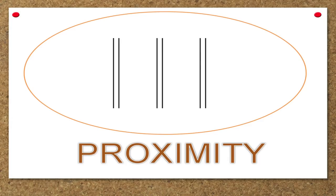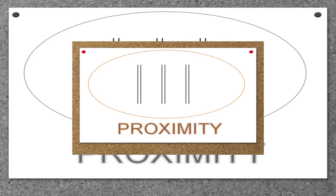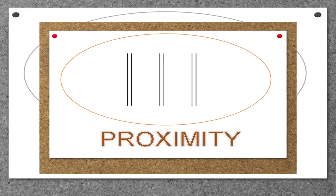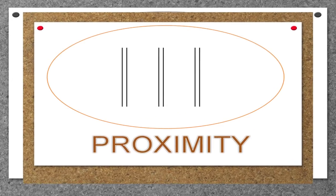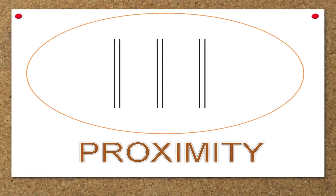The second is the law of proximity — all stimuli that occur together in space or time will be organized together. You can observe in the following figure that three groups of two vertical lines are there, and you will find it difficult to see six individual lines.